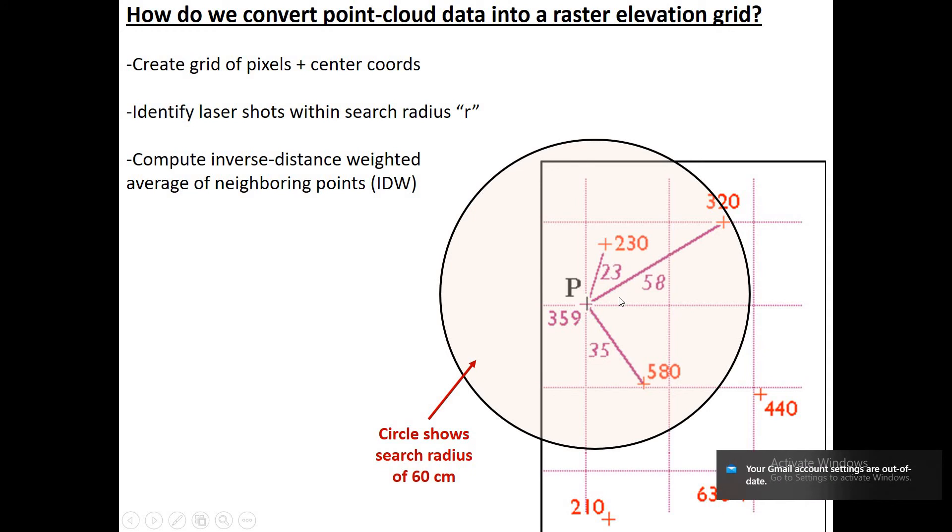We define our search radius, and in this case we identify three shot points that are within a 60 centimeter radius. This one's 23 centimeters away, this one's 58 centimeters, 35 centimeters away, and so on. They each have their own elevation value, 230, 320, and 580. What we're going to do is compute a weighted average of those values. We're going to weight them based on how far they are from the center of the pixel. Anything outside the radius doesn't get included for this particular pixel.